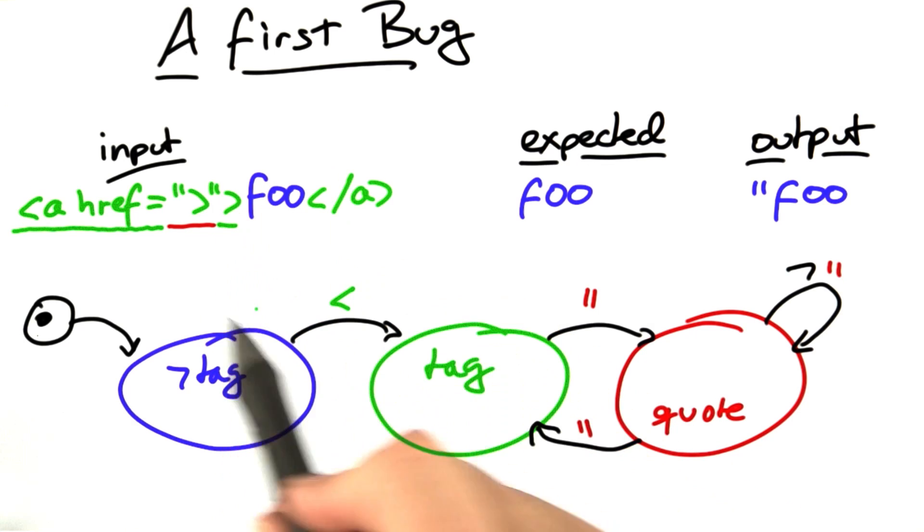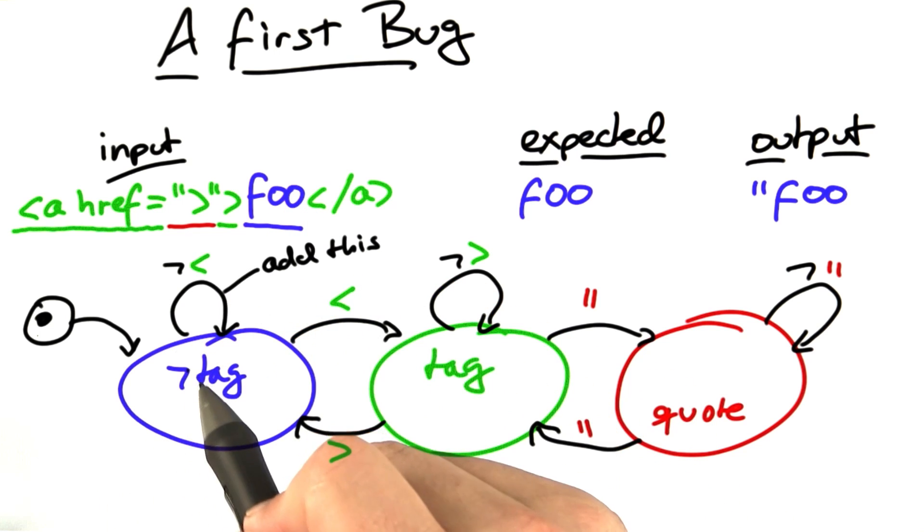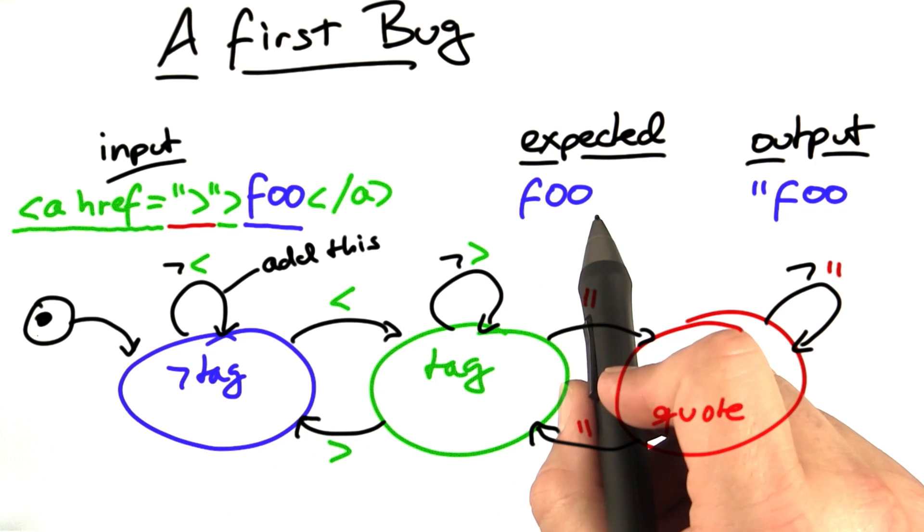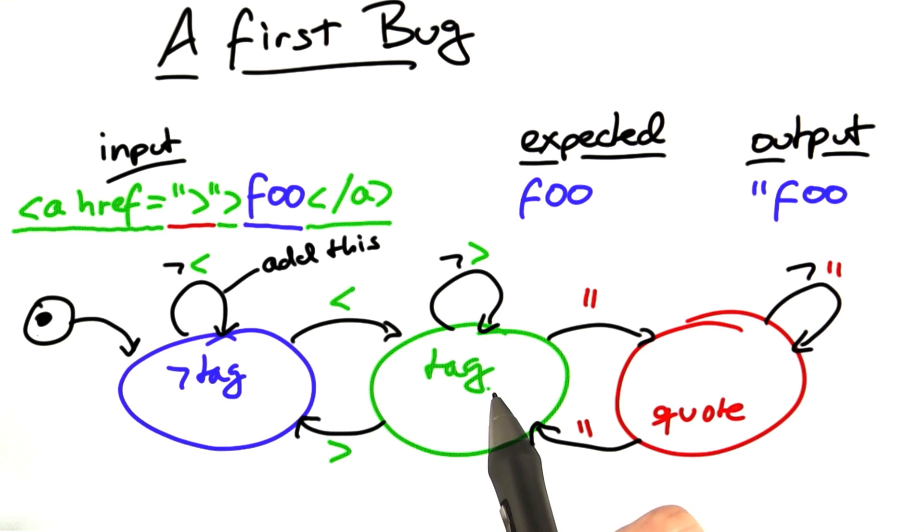That's when we go back into tag mode, which happens right here. When we see the greater sign, we exit tag mode, and we process the individual characters, and we add them to the output. Thus, our output should now become foo as expected. The remaining tag is processed just as before.